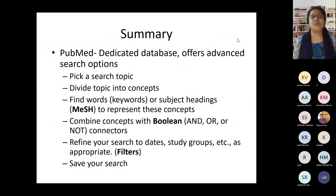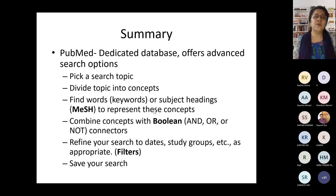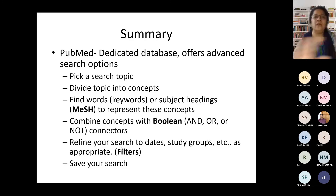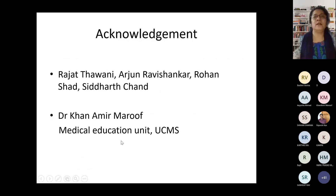Coming to the summary of literature search: first, pick a search topic and select a research question or topic. Then divide it into concepts — the keywords. Find the keywords yourself or use subject headings from MeSH to represent these concepts. Then combine these concepts with Boolean operators like AND, OR, or NOT. Then refine your search by using different filters. Once you have done the complete search, save your search in a particular place. That's all about PubMed search.